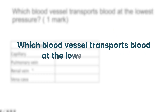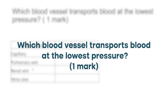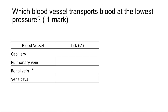Next is a one-mark tick-box question: which blood vessel transports blood at the lowest pressure? Blood is pumped at its highest pressure out of the aorta, from the strong force of contraction of the left ventricle. After blood has been transported all the way around the body it will have lost that pressure, particularly after passing through the capillaries where lots of liquid is forced out as tissue fluid. For that reason, the answer is the vena cava — the blood vessel furthest away from the aorta.